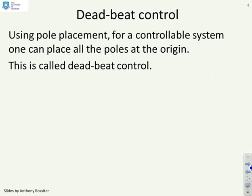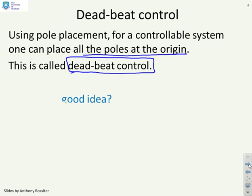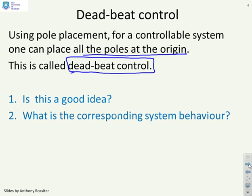Using pole placement for a controllable system you can place all the poles at the origin, and if you do this is called deadbeat control. Deadbeat means put all the poles on the origin. Is this a good idea? And what's the corresponding system behavior? We know that it converges to zero very quickly but what about transients?